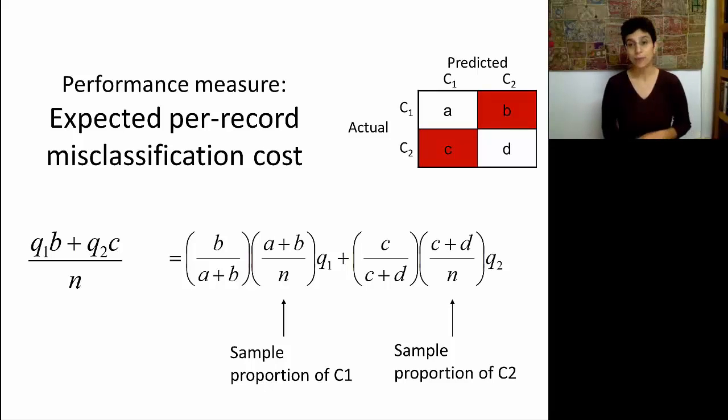It will also be affected by Q1 and Q2, of course. And what's the third piece? Does this look familiar? Does it remind you of sensitivity and specificity? Well, if C1 is the important member, then what is B over A plus B? It's not sensitivity, it's 1 minus sensitivity. And similarly, C over C plus D is 1 minus specificity. So this measure actually pulls in all the different pieces that we talked about earlier on.